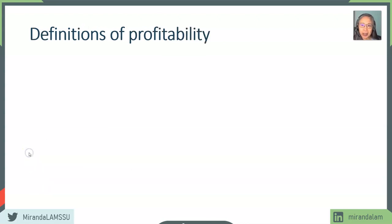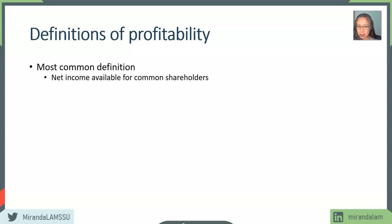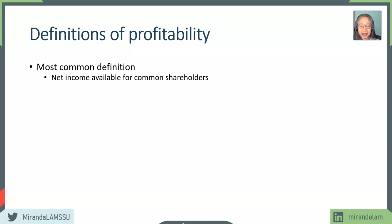Now let's take a look at what we mean by profitability. Most of the time when we think about profit, we think about net income — or more specifically, net income available for common shareholders. When converting this into a per share unit, we talk about earnings per share, or EPS, which is just net income divided by the number of shares outstanding. For a ratio, one of the most common ratios looked at by almost everybody is ROE, or return on equity. But there are other definitions as well, which we're going to dig into in this class.